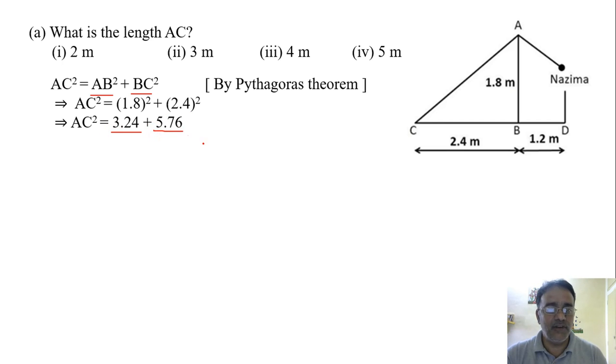If we add these two, we'll get exactly 9. And if we take the square root, we'll get AC is equal to 3 meter. So the correct answer is the second option.